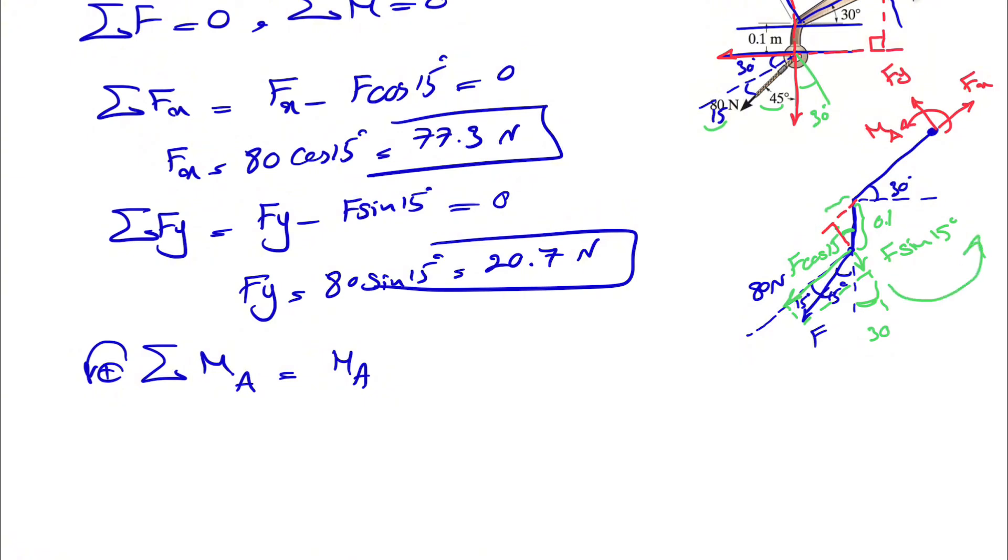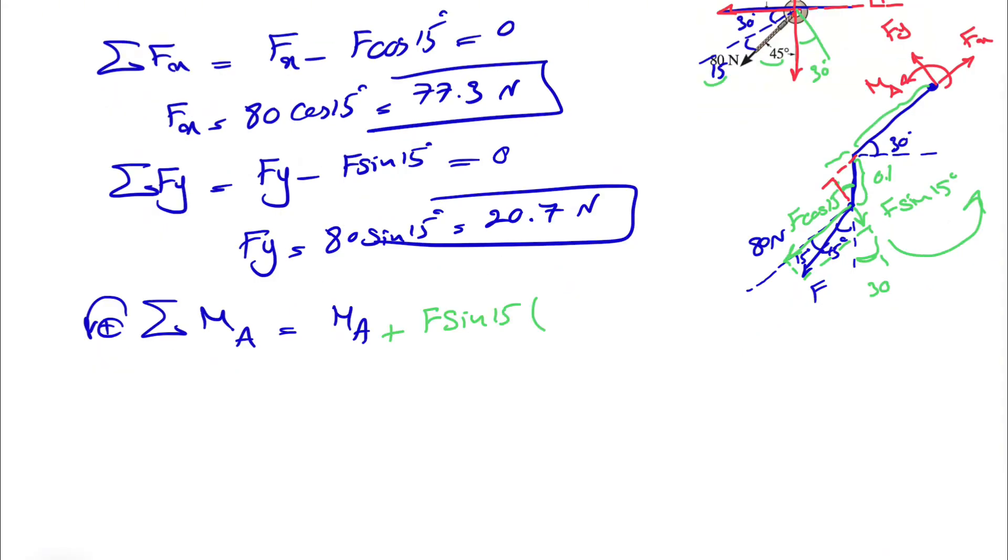The moment of this component, which is counterclockwise, so positive F sine of 15 degrees, which from the previous part we know is 20.7, and the distance would be this part, which is 0.3 plus this part, which was 0.1 sine of 30 degrees. So we have 0.3 plus 0.1 cosine of 30 degrees.